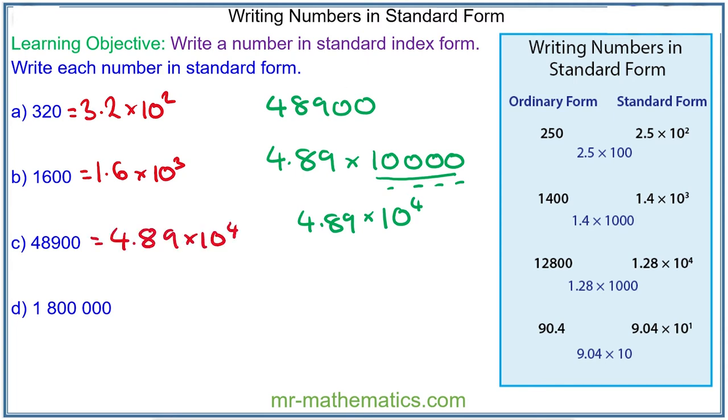And for question D we have 1,800,000. In standard form we have 1.8 times 1 million. And 1 million has 6 zeros. So it is 1.8 times 10 to the power of 6.